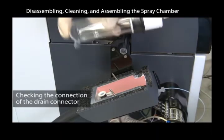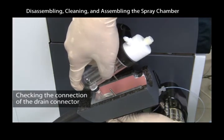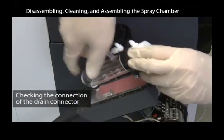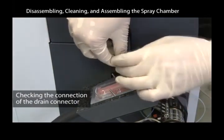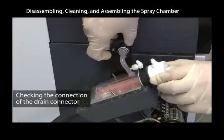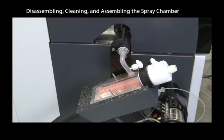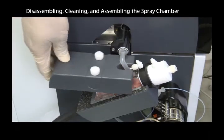Securely connect the drain fitting on the spray chamber to the drain connector to avoid drain leakage. Insert the spray chamber inside the chiller. Securely place the top cover on the chiller and tighten both screws.